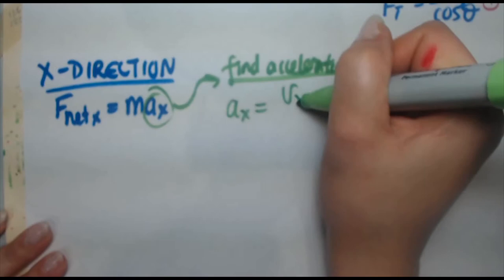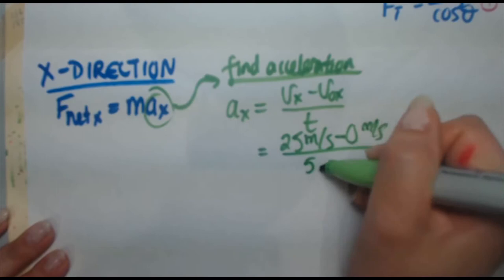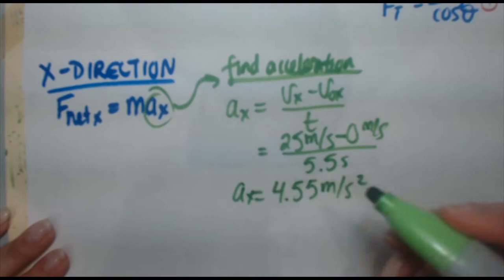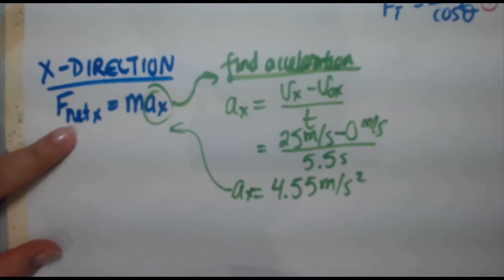So we're gonna find the acceleration on the side, and then we'll plug it into our final system. Acceleration in the x is equal to Vx minus V naught x over time. Vx is 25 meters per second. V naught x is 0 meters per second divided by 5.5 seconds. So if you enter that in your calculator, you're gonna get acceleration to be 4.55 meters per second squared. And that you're gonna use back in your math. I probably won't plug it in right away. I'm gonna try to simplify my expressions first, and then do that.